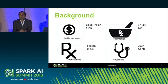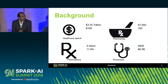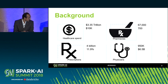Moving on to the pharmacy segment: we have 67,000 pharmacy stores in the USA. Each and every pharmacy store is processing a minimum of 700 pharmacy claims in a day. If they operate for 10 hours, they can process 700 claims, and those 700 claims will be paid by the insurance company. Moving on to prescriptions: we have 4 billion prescriptions processed by these 67,000 pharmacy stores annually.